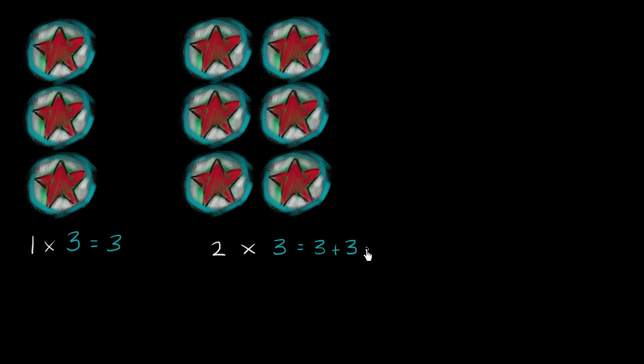Let's make it a little bit more interesting. Let's say I had two groups of three. So that's one group, and then here's a second group — two groups of three. How many total star patches do I have now? I have two groups of three, or another way of thinking about it is three plus three, which is equal to six. So one times three is three, and two groups of three — which is literally two threes — is six.